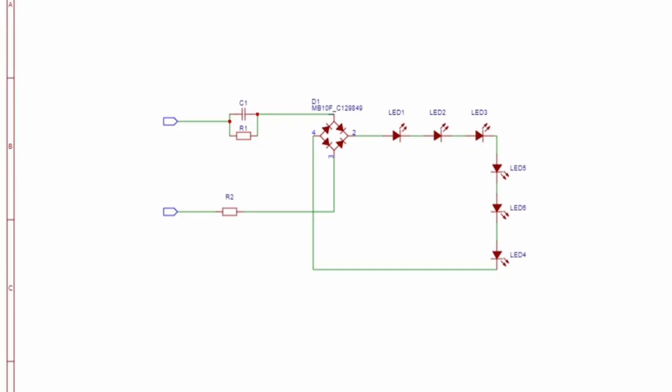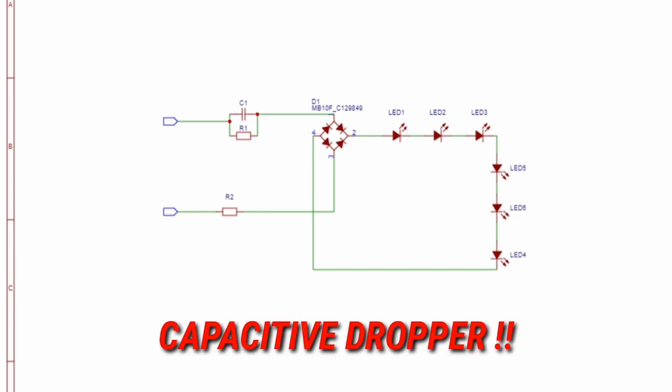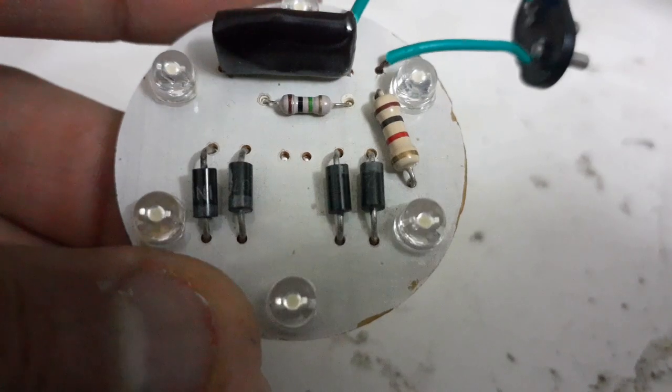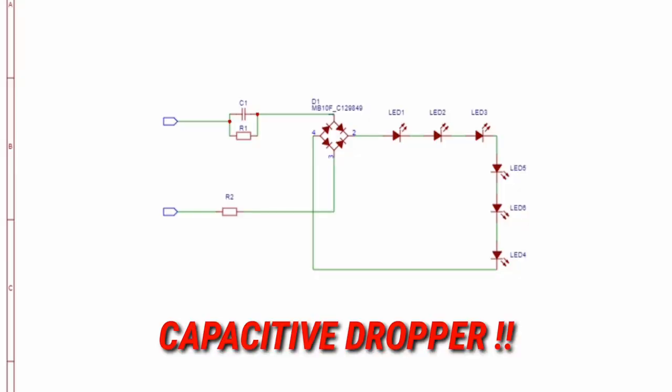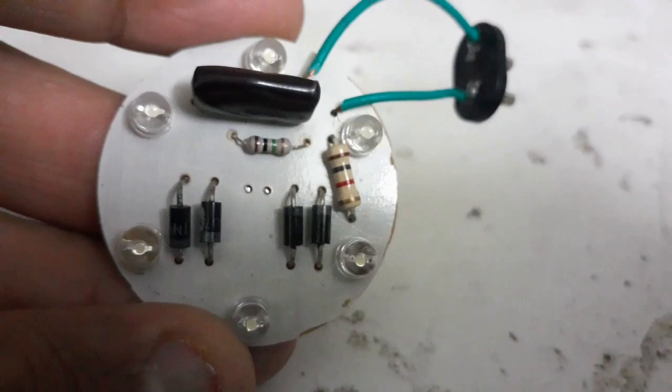So to reduce this effect there is a genius circuitry known as capacitive dropper as you can see in the modern LED light bulbs, but how does it work? So let's delve into it.